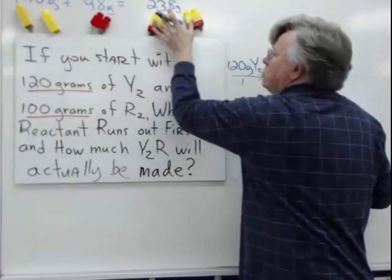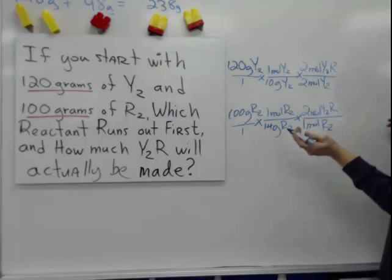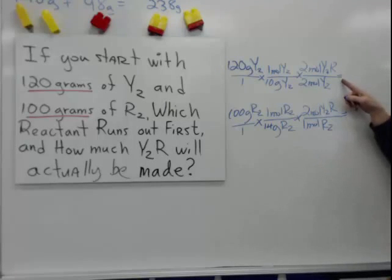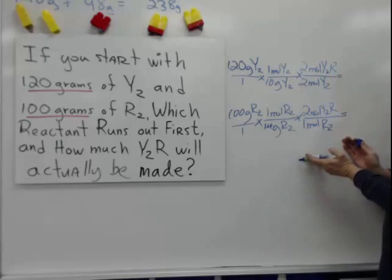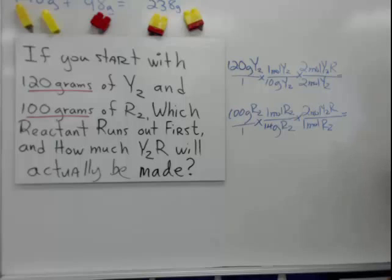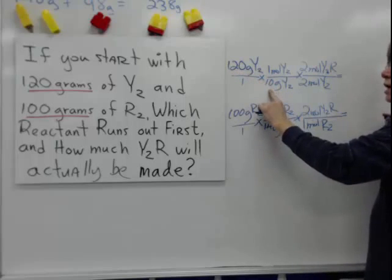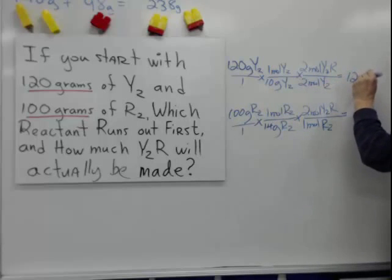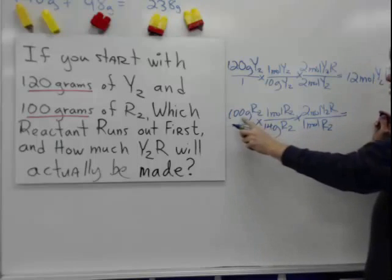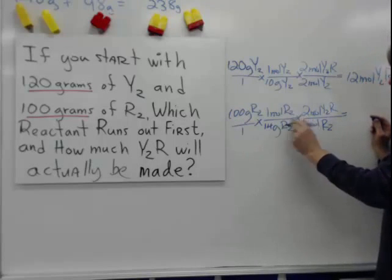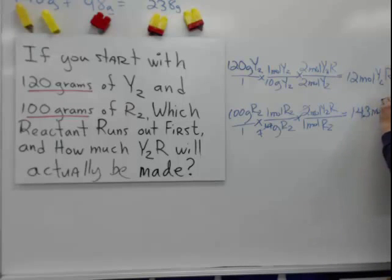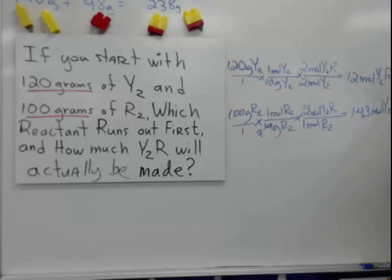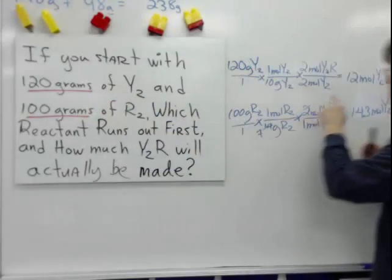We could actually stop at the mole stage since we just need to compare relative amounts — we can always convert to grams later. Running the math: for Y₂, 120 ÷ 10 = 12, times 1, gives 12 moles of Y₂R. For R₂, 100 ÷ 14 × 2, which is really 100 ÷ 7, gives approximately 14.3 moles of Y₂R. This demonstrates the reality of the situation.